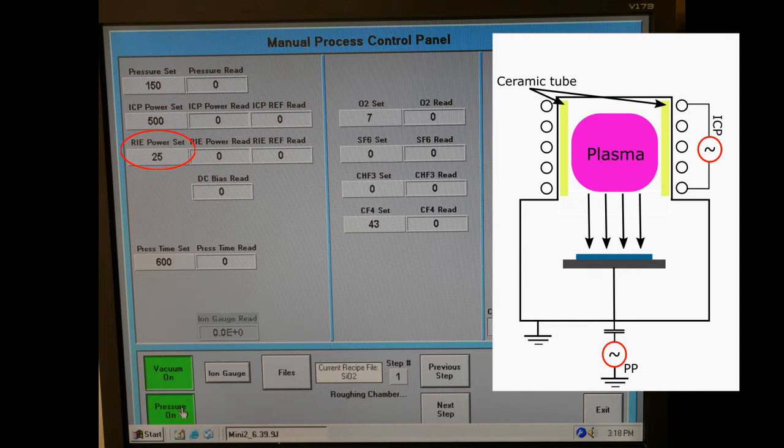Larger power results in more anisotropic structures, but also more sputtering, which can remove the etch mask before the required etch depth is reached.